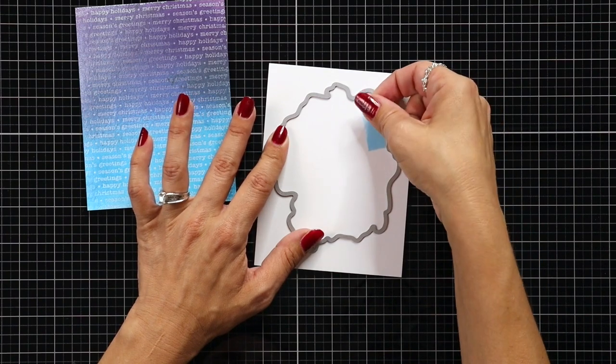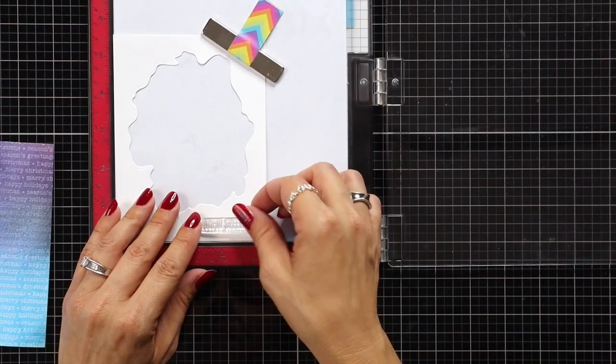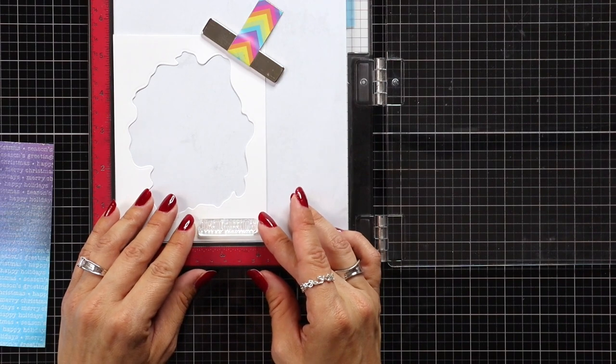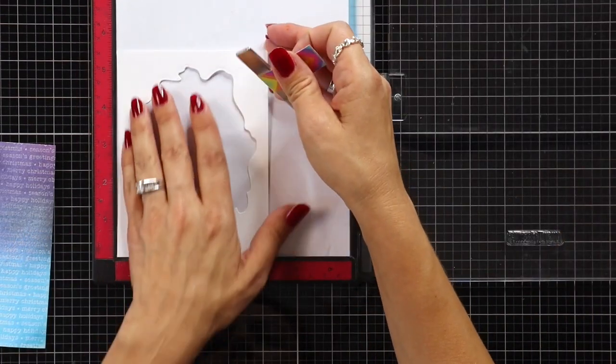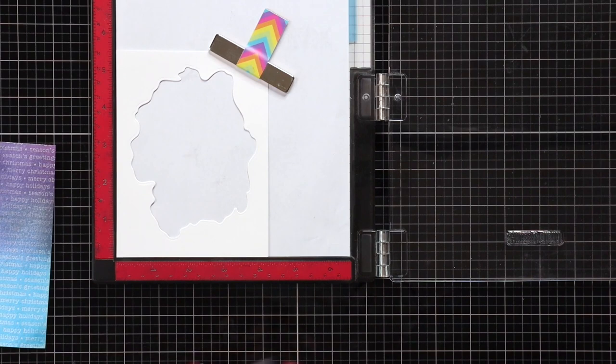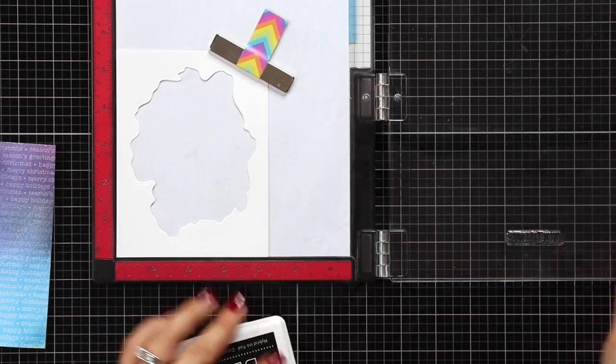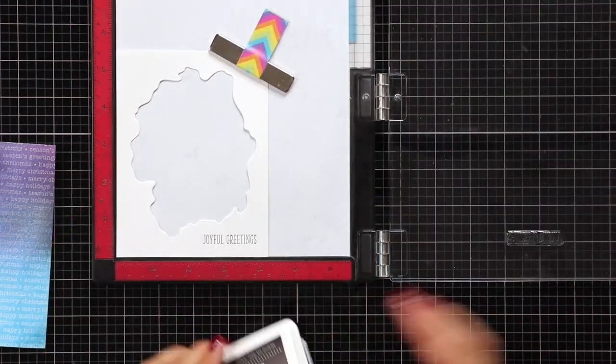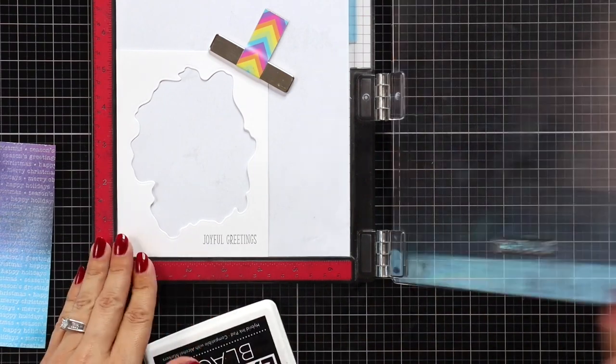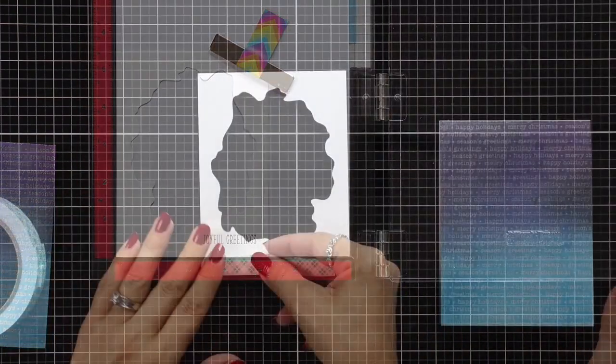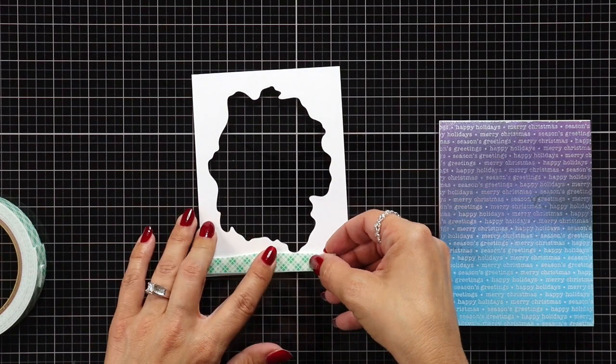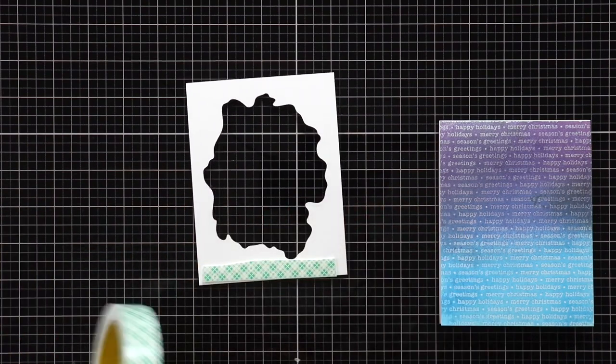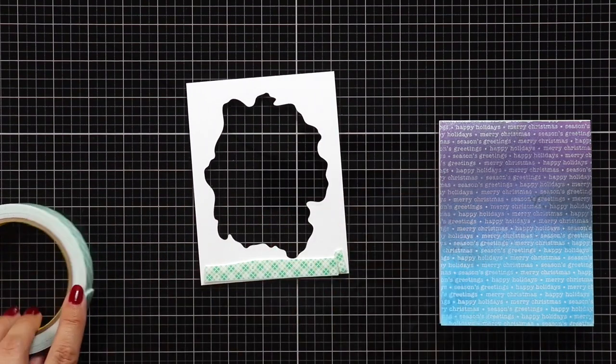While my background is drying, I took a piece of white cardstock that is 4 1/4 by 5 1/2 and I die cut out that Watercolor Wash Freeform die. I place this back in my MISTI tool and I'm just stamping Joyful Greetings in the bottom corner. That greeting is off of the Jingle Hugs stamp set. Now I'm going to line the back of that with some foam tape to add a little bit of dimension.